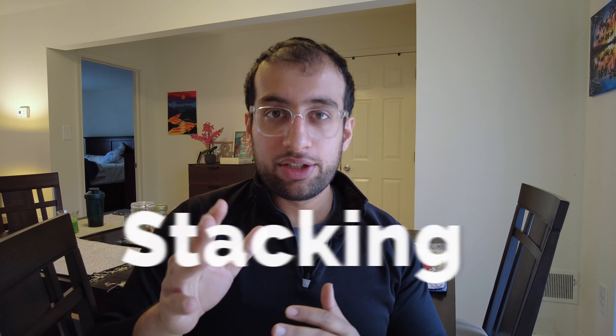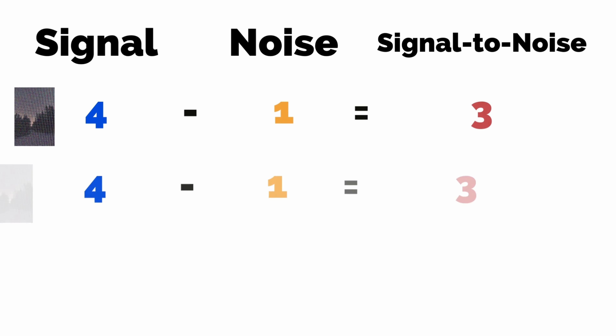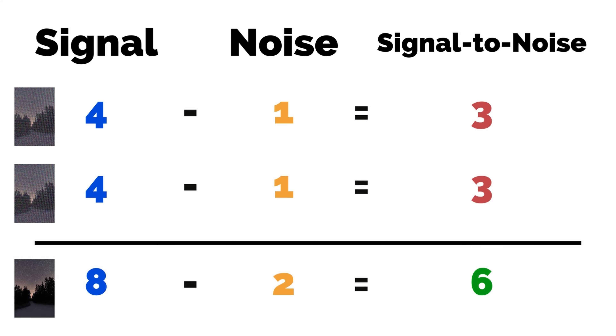Finally, think about stacking images. This is used a lot in astrophotography where there's very little light — you take multiple images of the same section of the sky and stack them together, which raises the signal-to-noise ratio. You're adding signals and noises together, but for example if your signal is four and your noise is one, adding another image gives you eight and two — so the difference between signal and noise becomes much greater. Basically, you're reducing noise by adding more signal from multiple captured images of the same scene.